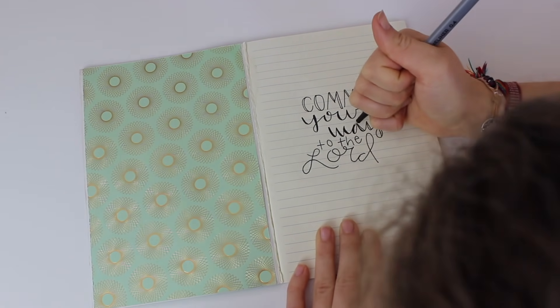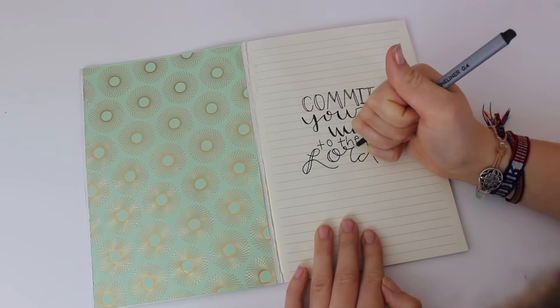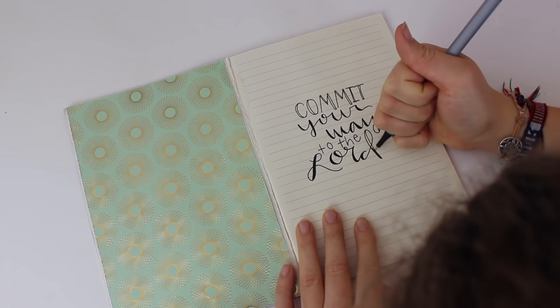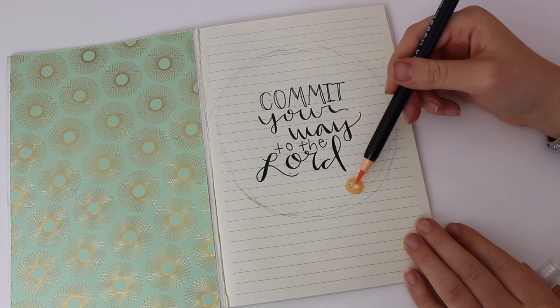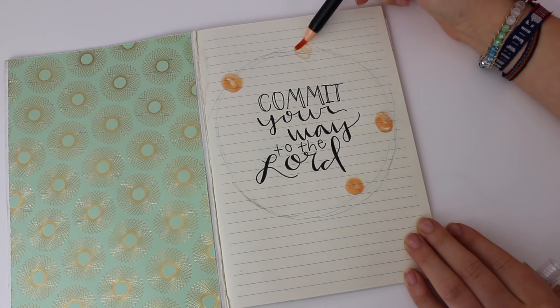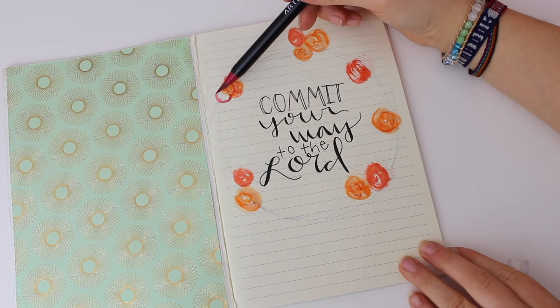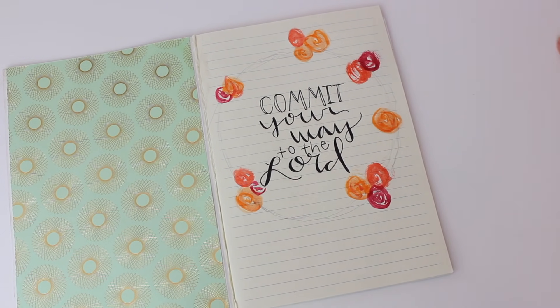If you don't know what a bullet journal is, it's pretty much a journal that you can customize and make it anything you want. You can put anything you want in there. It's a way to organize things, to make to-do lists. It could be a sketchbook, a notebook, a diary. So it's really customizable to what you want.